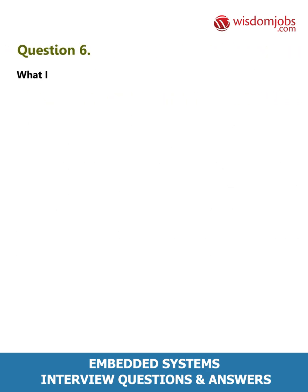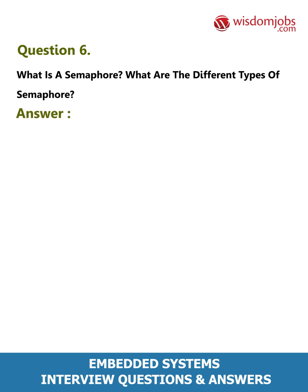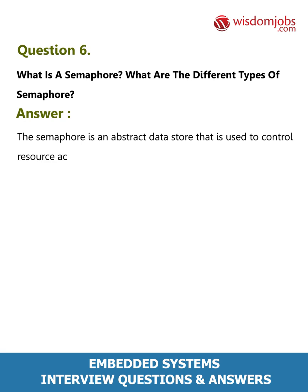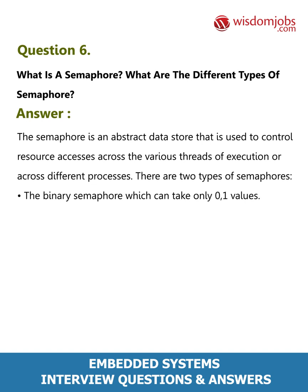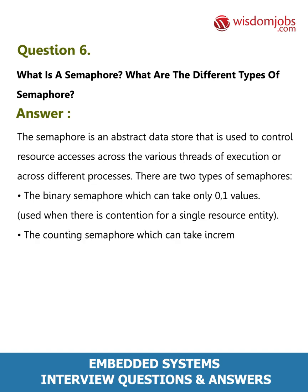Question 6: What is a semaphore and what are the different types? Answer: A semaphore is an abstract data store used to control resource accesses across various threads of execution or different processes. There are two types: the binary semaphore, which takes only 0 or 1 values and is used when there is contention for a single resource; and the counting semaphore, which takes incremental values up to a limit and is used when the number of resources is limited.